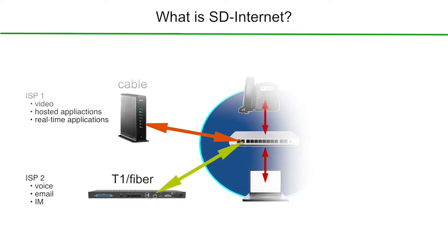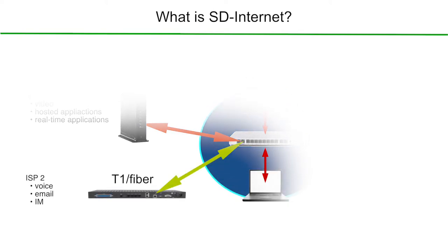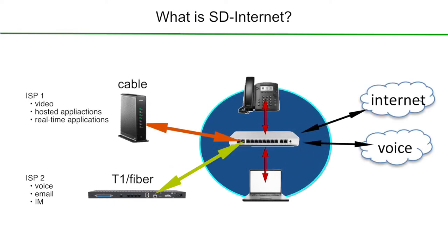In ISP2's case, which we're saying is a T1, we are assigning voice, email, and instant messaging to that service. We're doing that because that service normally is more reliable than your cable provider might be. Also, we know that typically in a single office environment, you don't need nearly as much bandwidth for those applications to work properly.